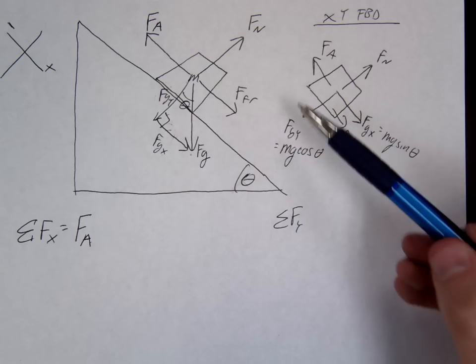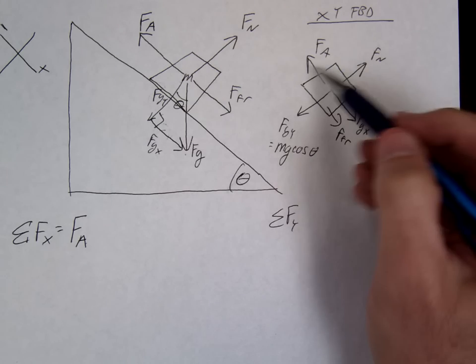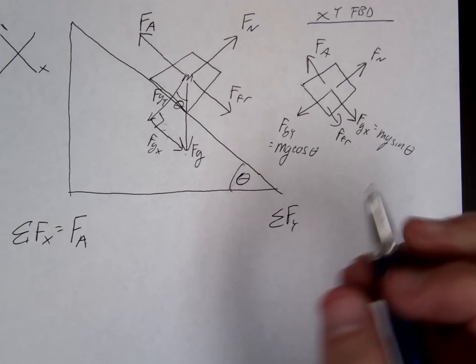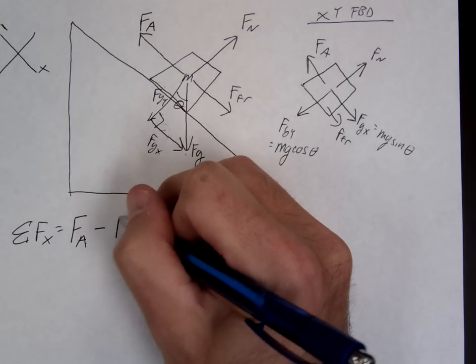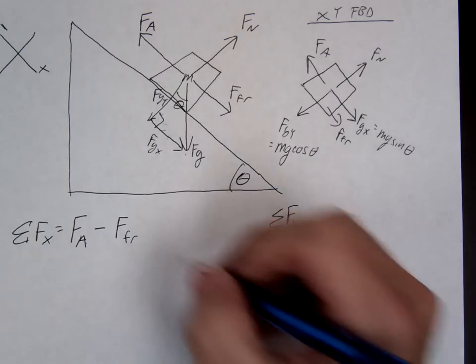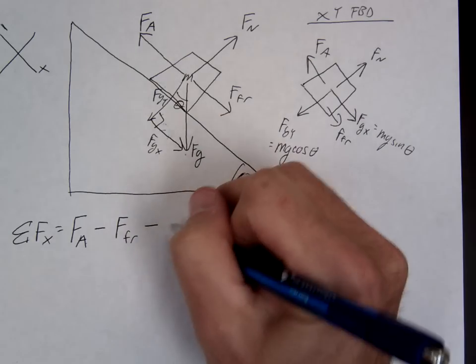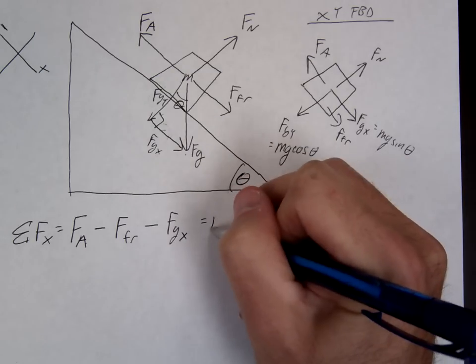So, since it's going up the ramp, I'm going to say that's the positive direction. So, in which case, FA would be positive. The negative direction would be our friction. I also like friction to oppose, if possible, the motion to make it negative. And, FGX equals MA.